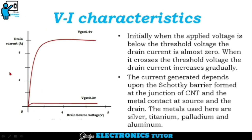This is the VI characteristics of CNTFET. Initially, when the voltage applied is below the threshold voltage, the drain current is almost zero. When it crosses the threshold voltage, the drain current increases gradually. The current generated depends upon the Schottky barrier formed at the junction of the CNT and the metal contact at source and drain. The metals used here are silver, titanium, palladium, and aluminium.